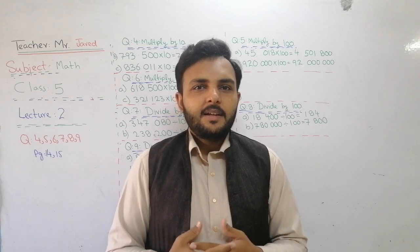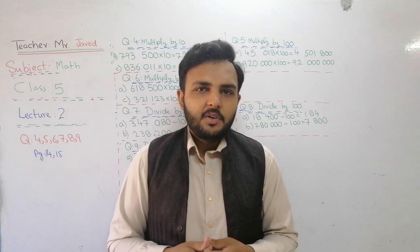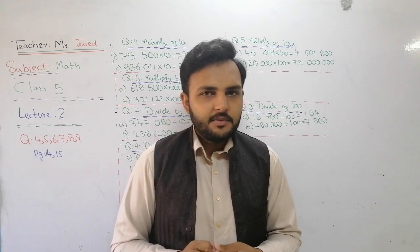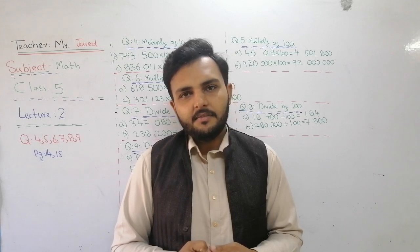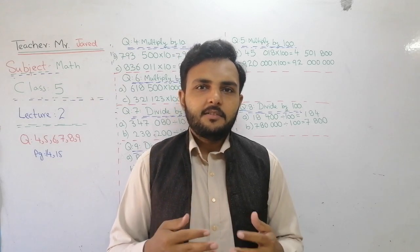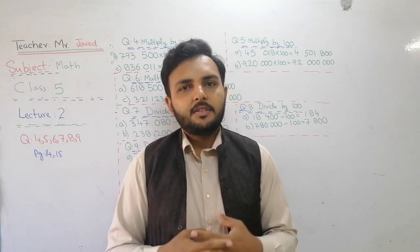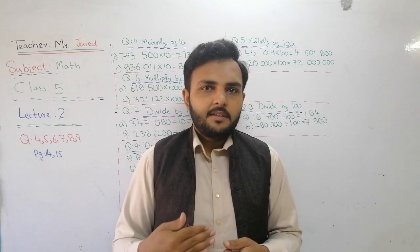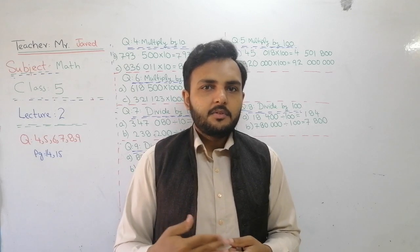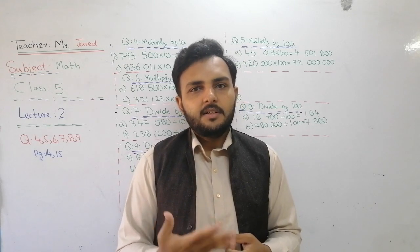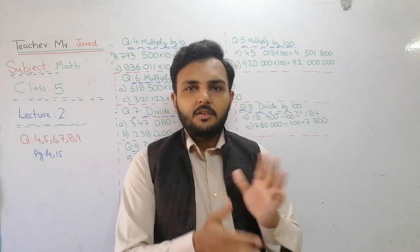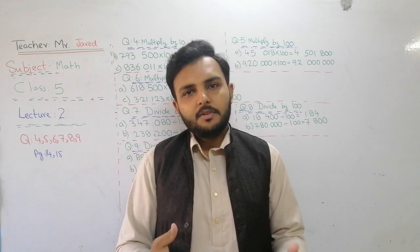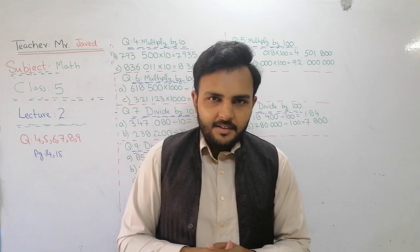It's very simple. You just count how many zeros are in 10, 100, or 1000 and write that many zeros on the right side of the given number. Then you will get the answer.